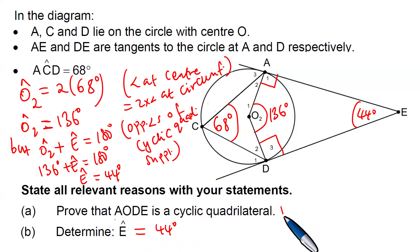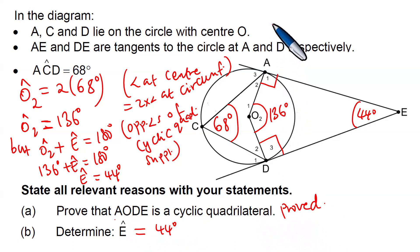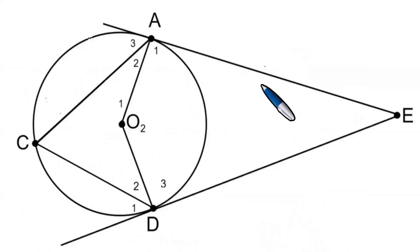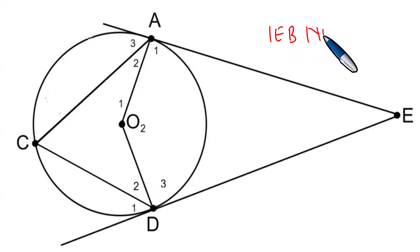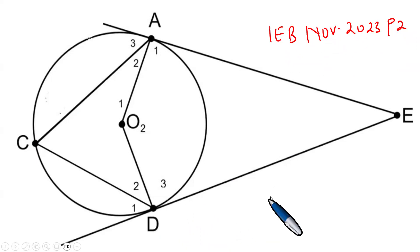AODE is a cyclic quad has also been proved here. Therefore, we have solved this particular geometry question with ease. This is a very interesting question and it appeared in the IEB exam, November 2023, Paper 2. Thanks a lot to everybody for watching and for joining us. Goodbye.